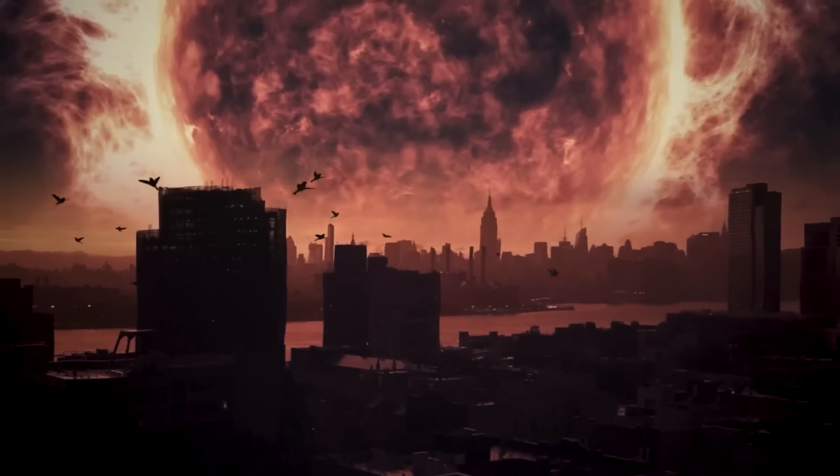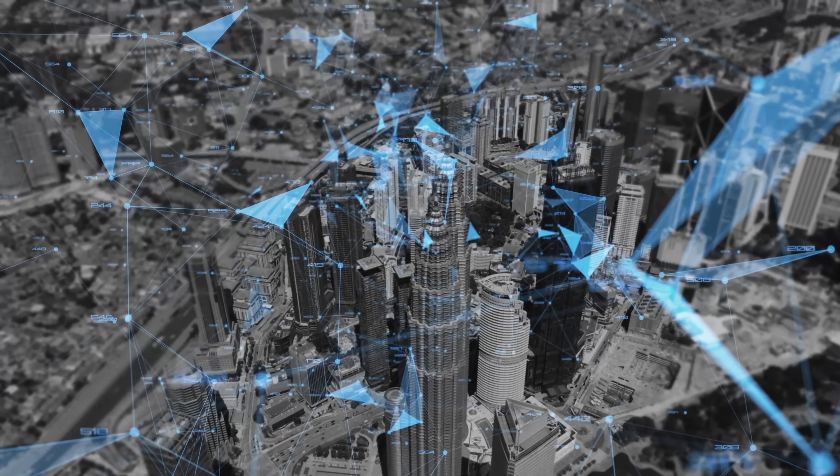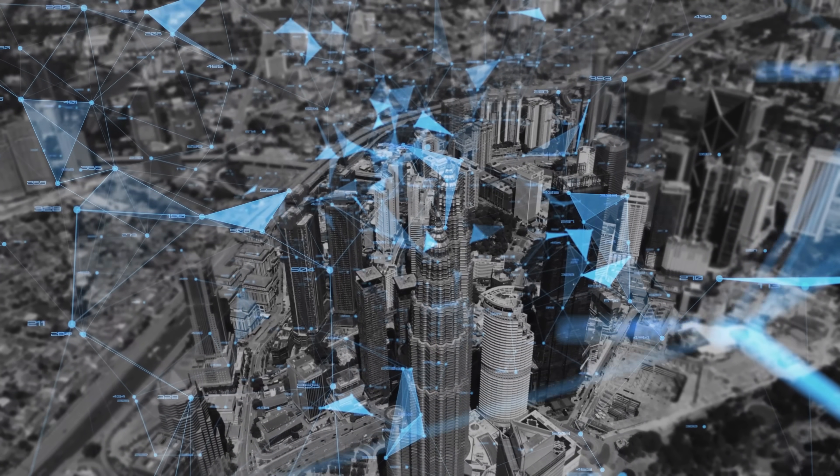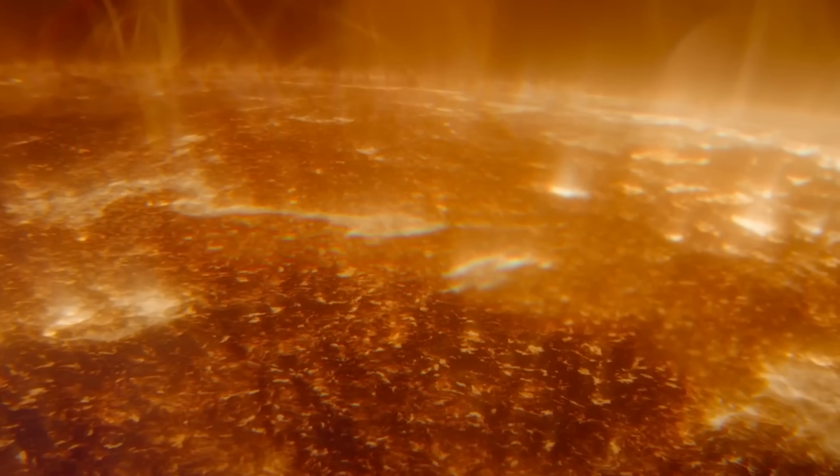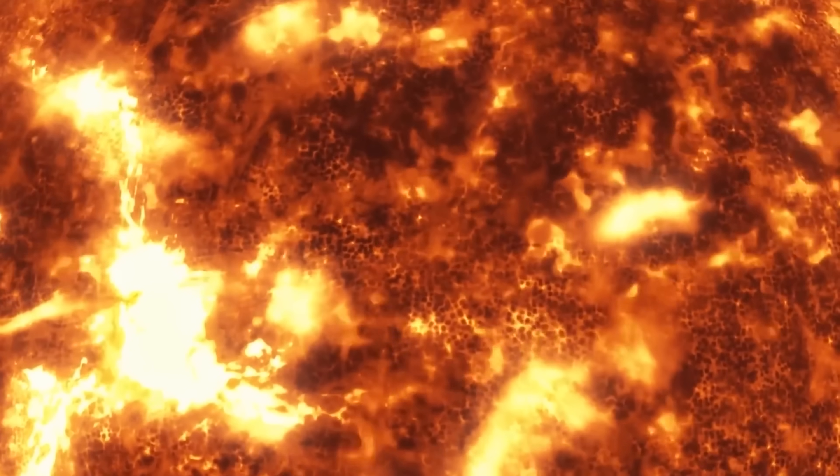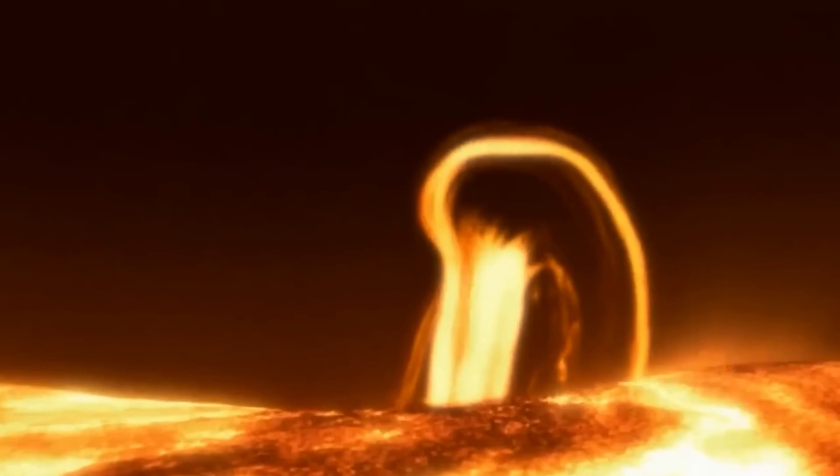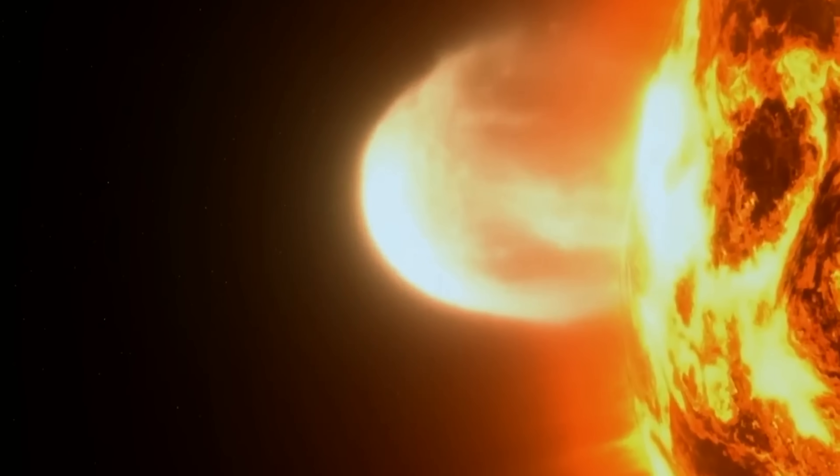And here's the scary part. Our modern world is even more vulnerable now. Everything runs on satellites, internet, navigation, electric grids. If a massive solar storm hits today, it could cause trillions of dollars in damage. Think of it like a space hurricane, but one we can't see coming, unless we understand how the Sun works.